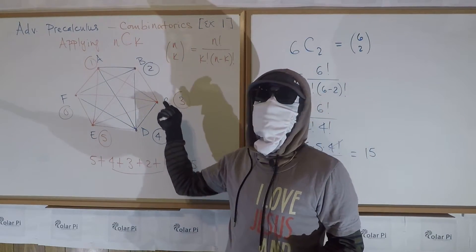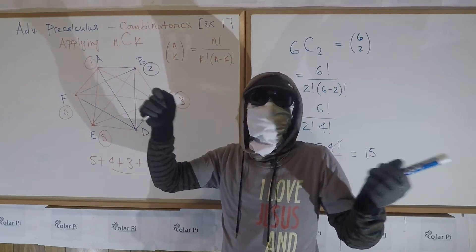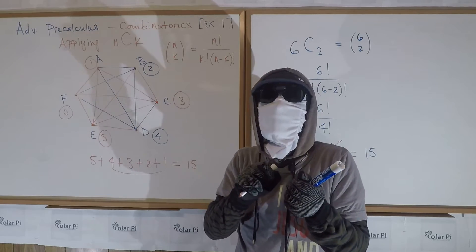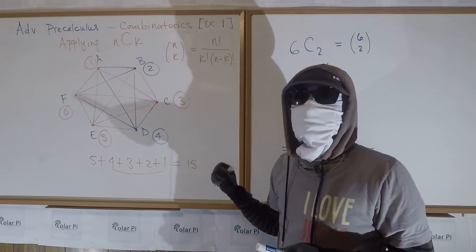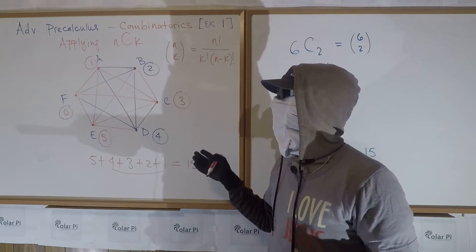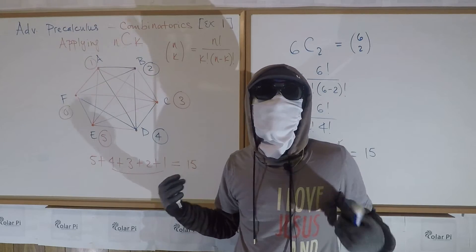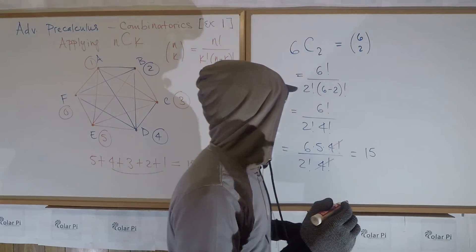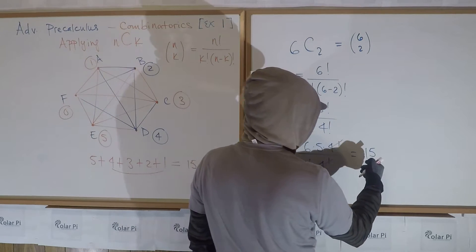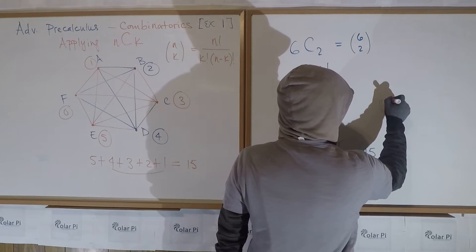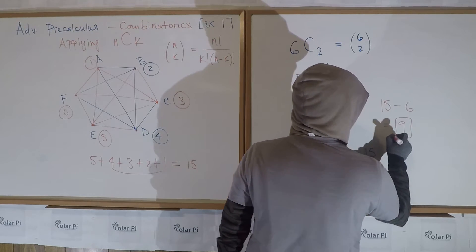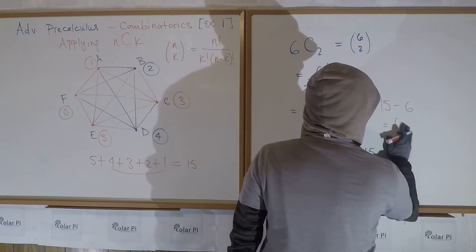My purpose here was trying to figure out how many lines I can draw between two dots — so how many lines can I draw connecting six dots? The interesting application here is figuring out how many diagonals there are in an n-gon. So if I wanted to know how many diagonals there are in this hexagon, I would take this fifteen and subtract the number of sides, which is six. So there are nine diagonals in a hexagon.